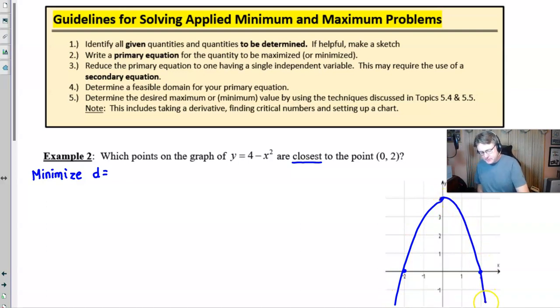If you were to graph 4 minus x squared, it's not a very difficult thing to graph. It's just going to be an upside down parabola. If the point (0, 2) is given here, what point on this graph is going to be closest to (0, 2)? What tool do we have to use, what equation, what formula will equate distance to the situation? That particular formula will be the distance between two points.